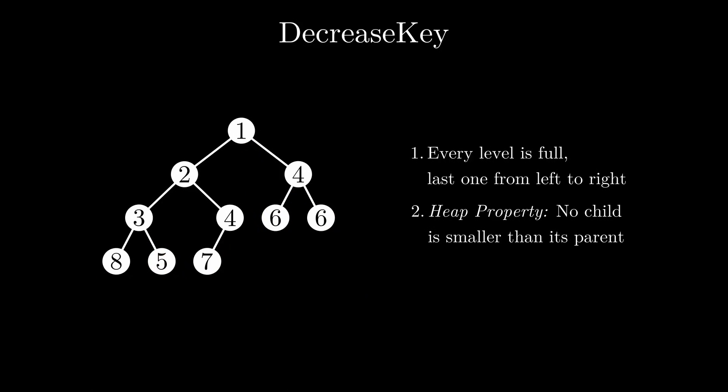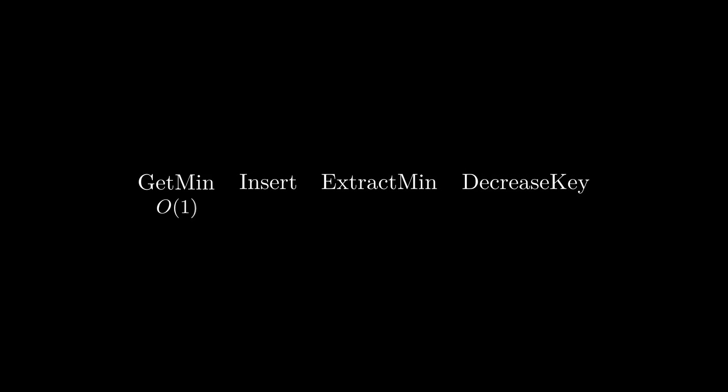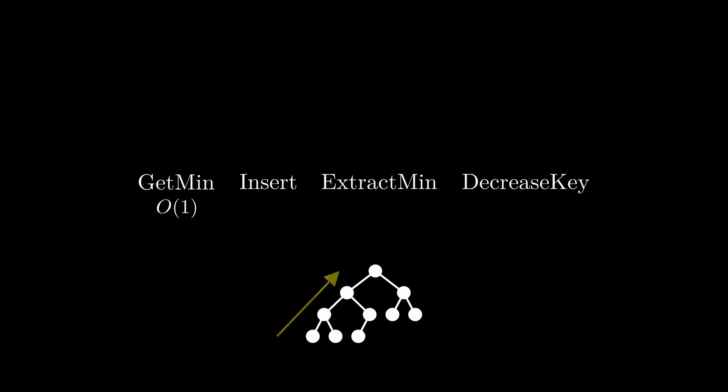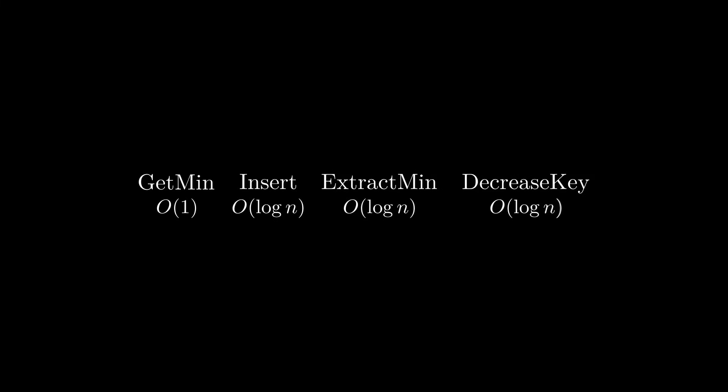DecreaseKey turns out to be an essential part of many algorithms which use priority queues. We now know the four basic operations of priority queues. Accessing the minimum value can easily be done in constant time — we simply return the value of the root node. For the other operations, we might need to move one node through multiple tree levels: top to bottom for ExtractMin, and bottom to top for insert and DecreaseKey. In the worst case, we need to walk through every level, but the number of levels only grows logarithmically, so the running times are logarithmic in the size of the heap. Logarithmic running time is pretty good — it's the running time we also have for binary search. But can we do any better?